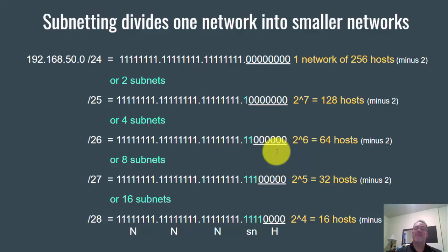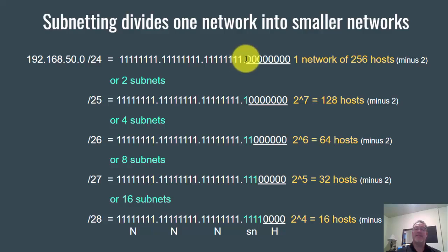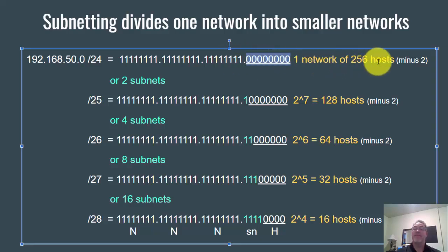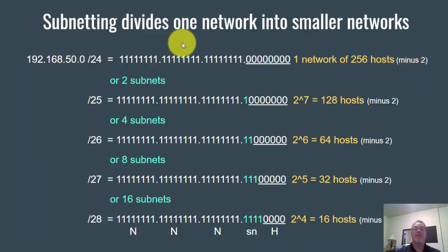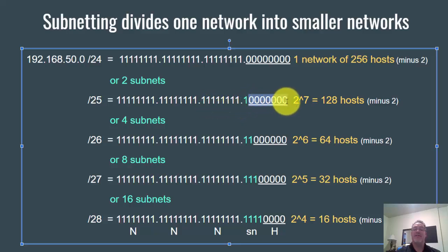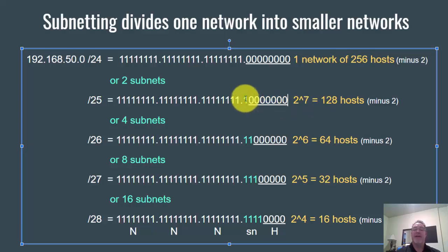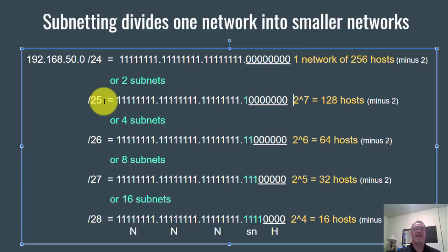Let's take another look at that. Same concept: you have one network of 256 hosts. Notice the subnet mask /24 has all zeros in the host portion — eight bits of zeros, or two to the eighth power, equals 256 hosts, minus two is 254 usable. If I want to turn this into two subnets, I change it to /25. Now my subnet mask has one more one, and instead of eight zeros I only have seven zeros. Two to the seventh power is 128, so I have 128 hosts minus two per subnet. That's what the subnet mask looks like for two subnets — /25.